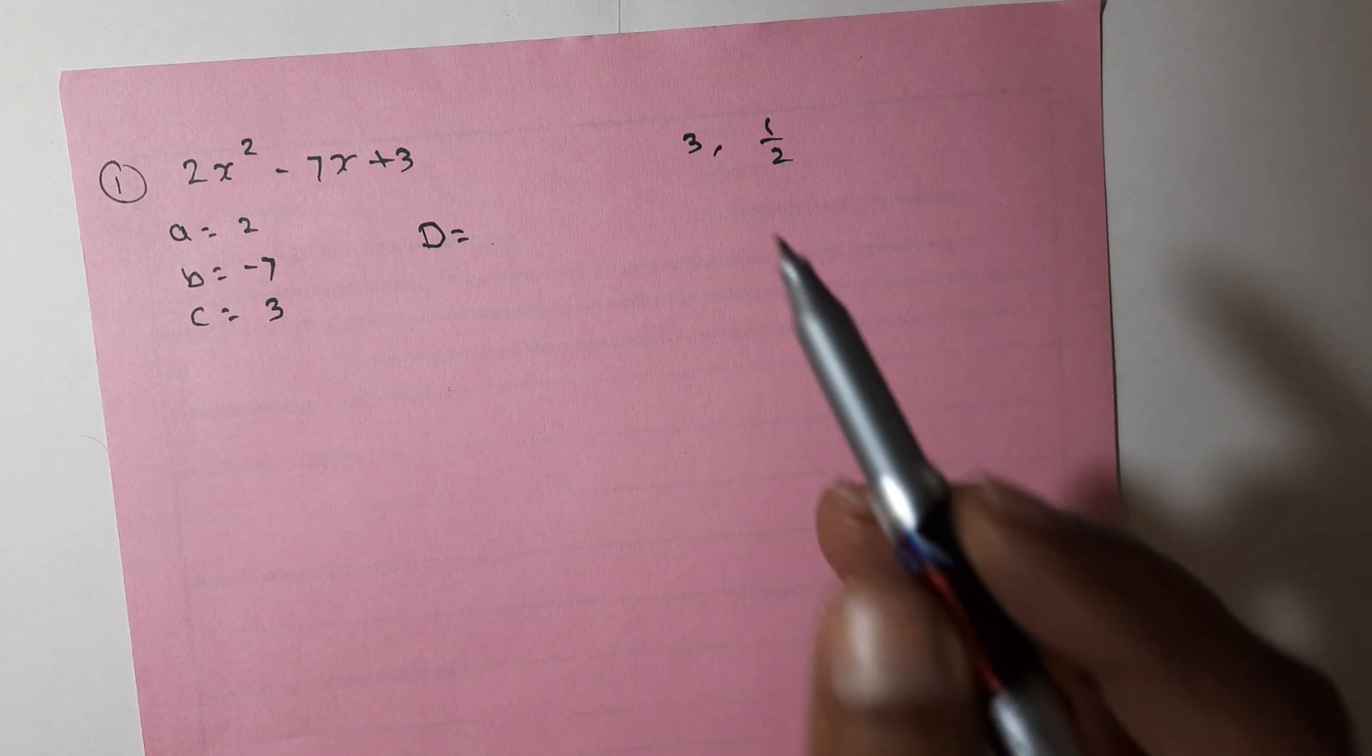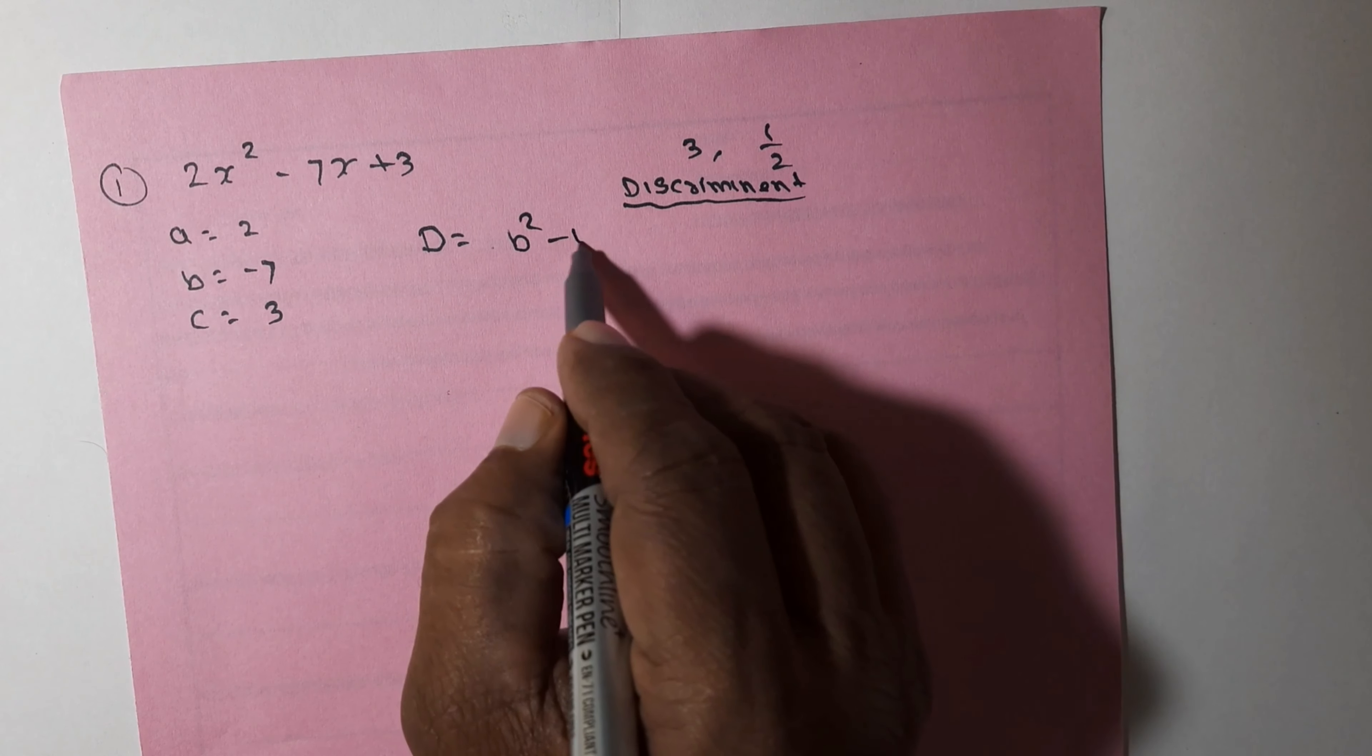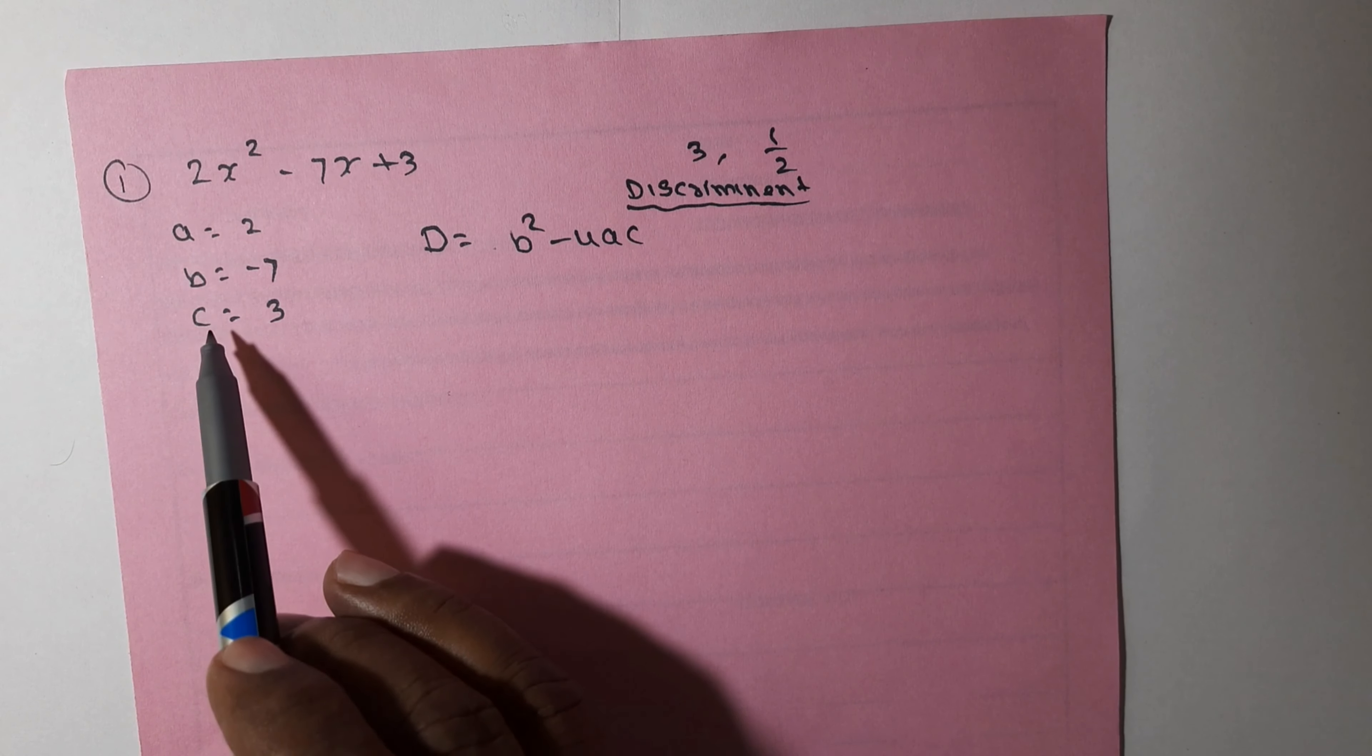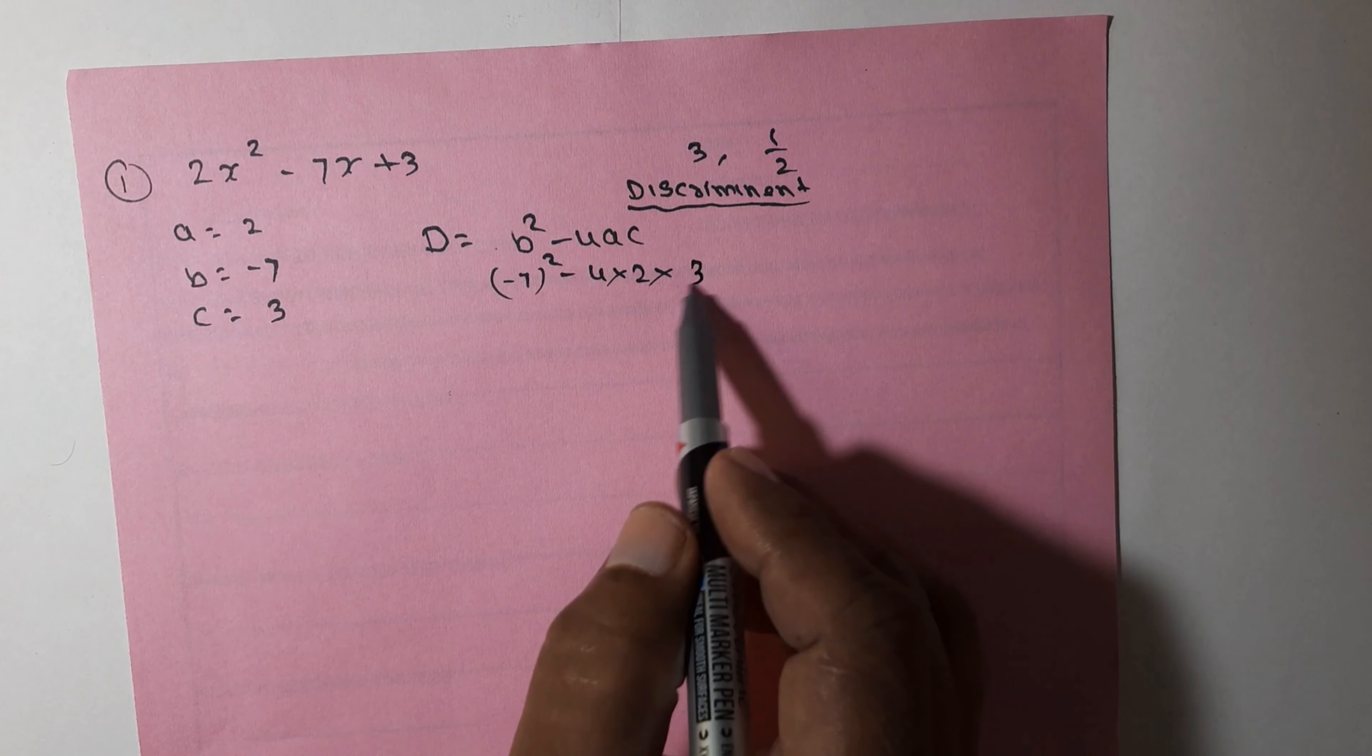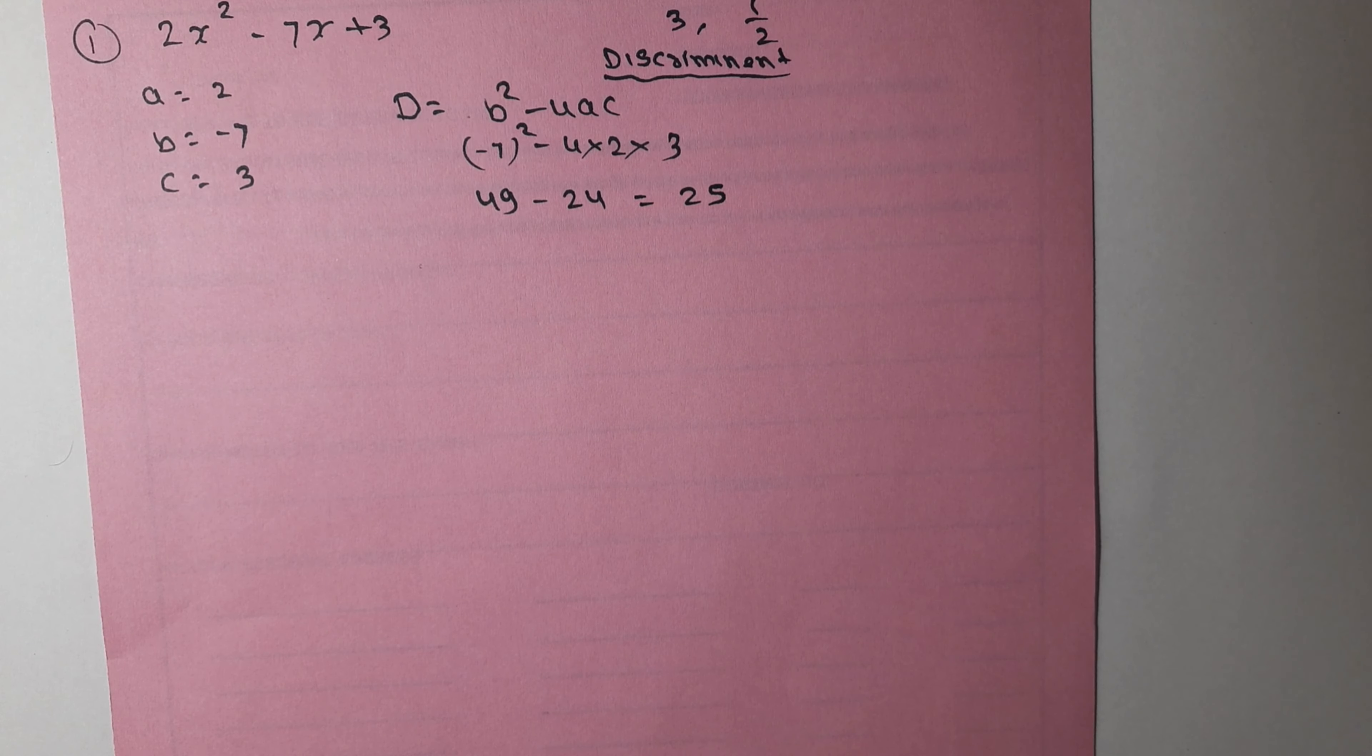Discriminant D has a formula in quadratic equations: D = b² - 4ac. We will put in the values. b was -7, so we have (-7)² - 4 × a, which was 2, times c, which was 3. The square is 49. Minus minus becomes plus. 4 × 2 = 8, 8 × 3 = 24. So 49 - 24 = 25.